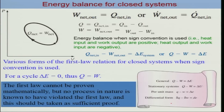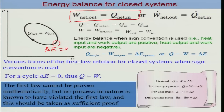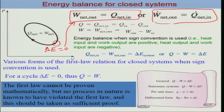We are aware that W-net equals Q-net for a cyclic process. Since it is a cyclic process, the system returns to its initial state, so delta E should be zero, and thus W-net-out equals Q-net-in. We can write W-net-out as the system work done on the surroundings minus the surrounding work done on the system, and similarly Q-in minus Q-out.